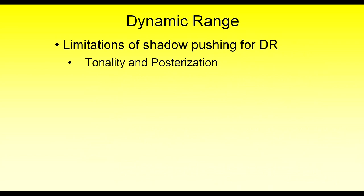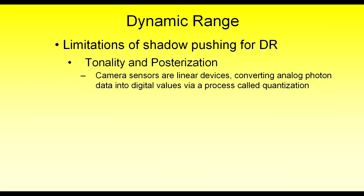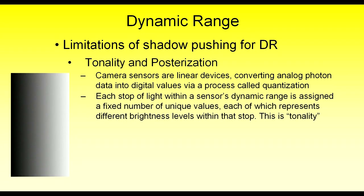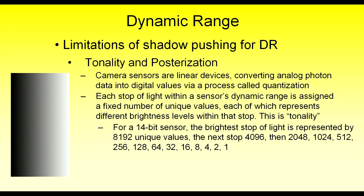What are the limitations of pushing the shadows as a means to achieve dynamic range? To understand that, you first need to understand tonality and the potential for posterization. Camera sensors are linear devices, and they convert analog photon data into digital values — a process called quantization. Each stop of light within the sensor's dynamic range is assigned a fixed number of unique values, each of which represents different brightness levels within that stop. We've talked about how one stop to the next represents a doubling or halving of light, but within that stop you also need to represent the different levels of light — that is called tonality. For 14-bit sensors, the brightest stop of light — the stop starting at the clipping point down by one full stop — is represented by a total of 8,192 unique values.